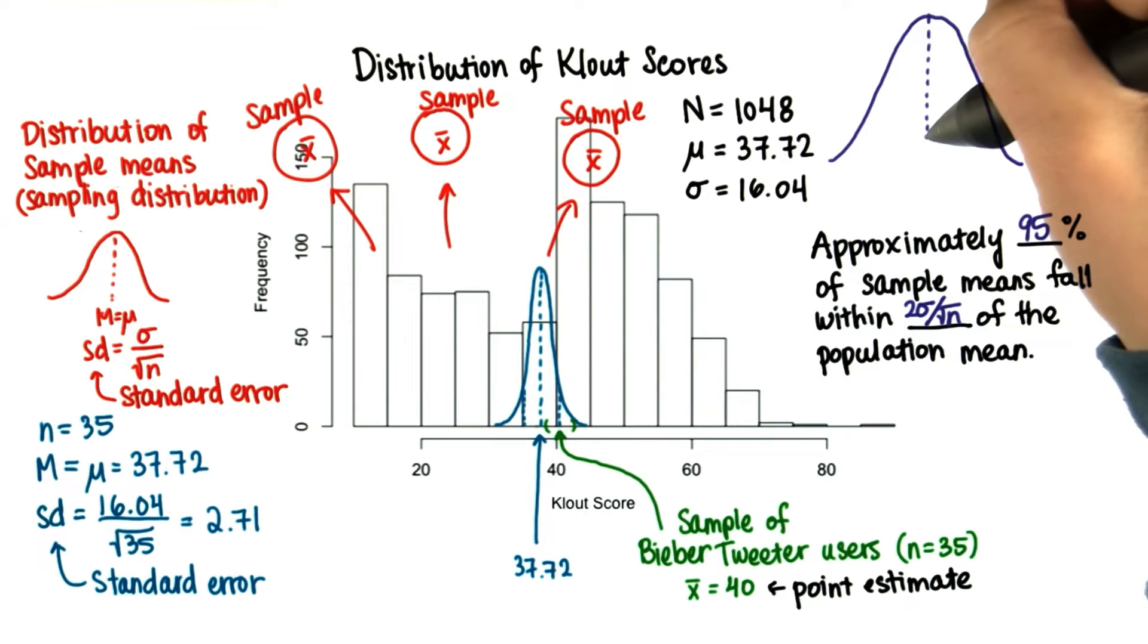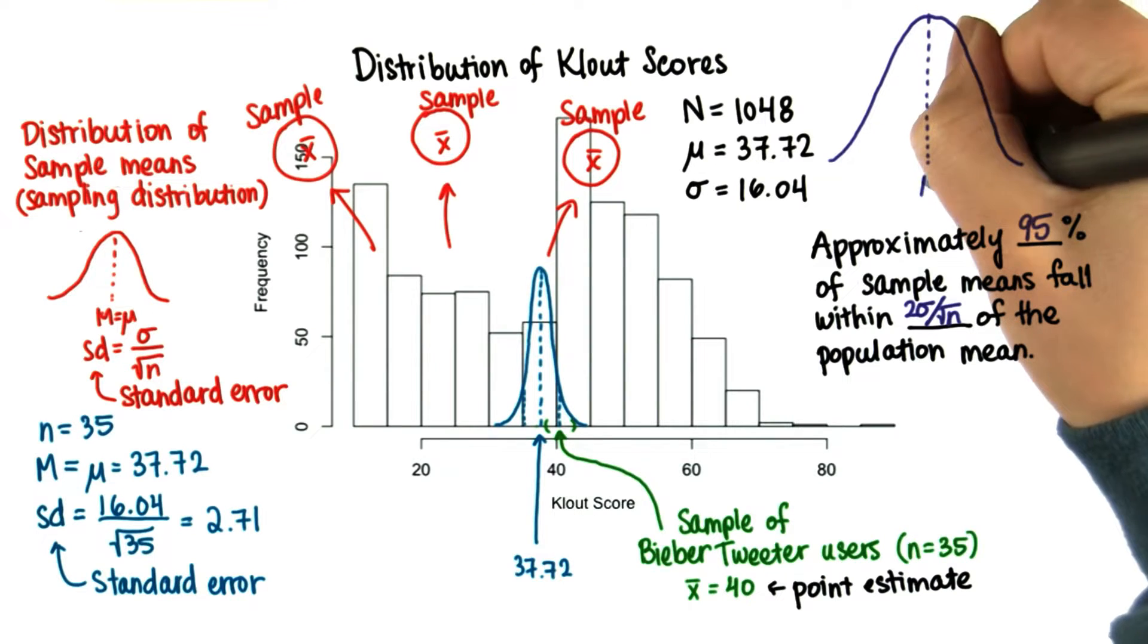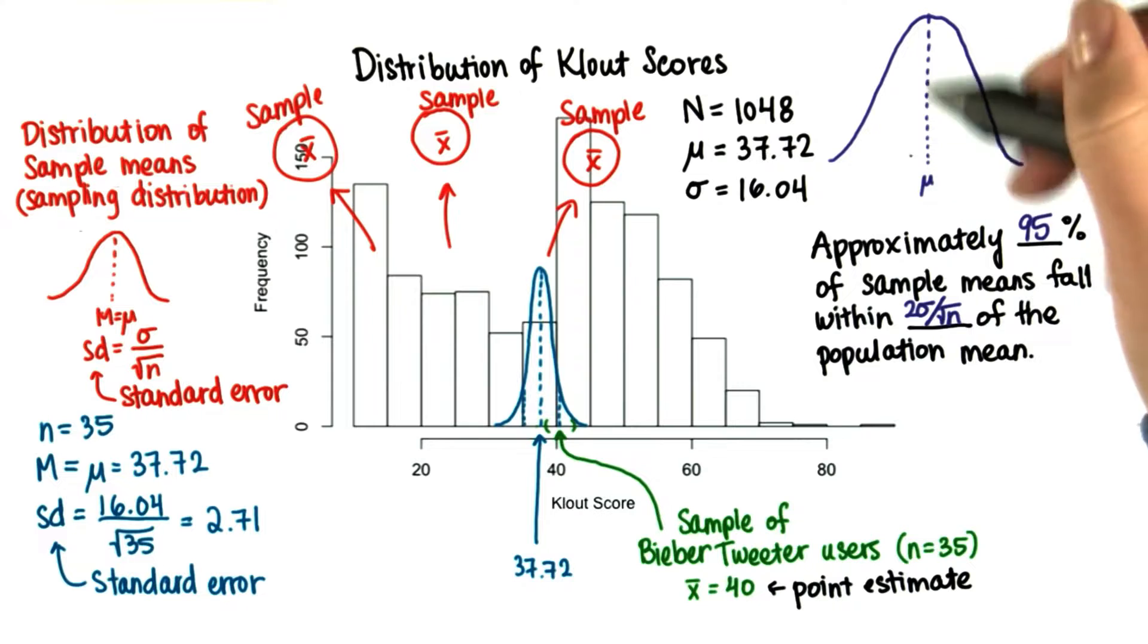So let's redraw this sampling distribution. If this is the mean of the population, which is the same as the mean of the distribution of sample means.